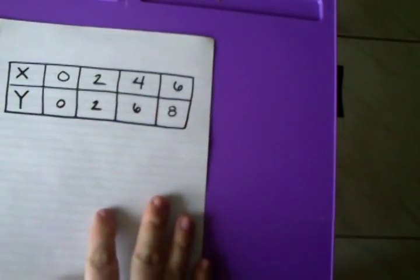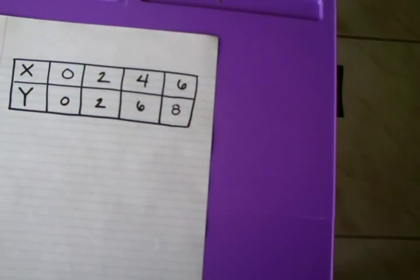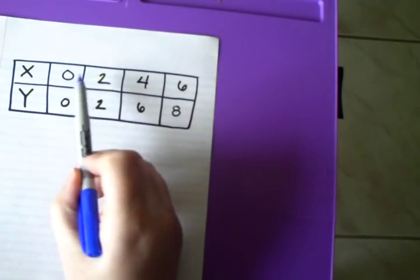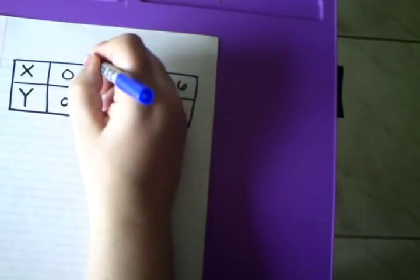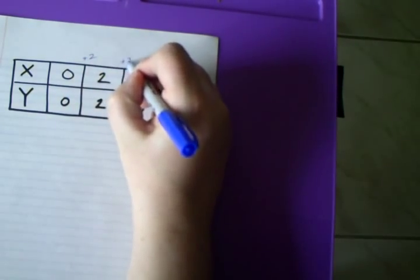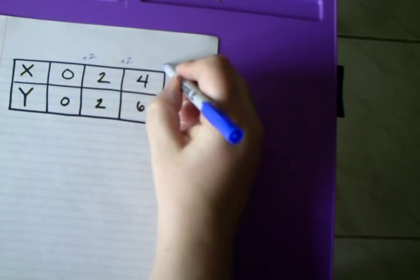So here is my first graph. What I'm going to be looking at is not the numbers in the actual chart itself. Instead, what I'm going to look at is the change in between the x's. So I ask myself, how do I turn a 0 into a 2? Well, by adding 2. How do I turn a 2 into a 4? How do I turn a 4 into a 6?